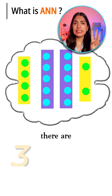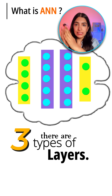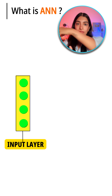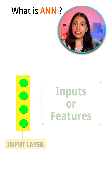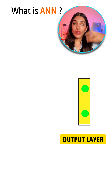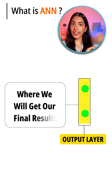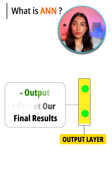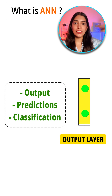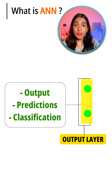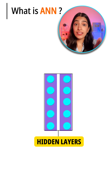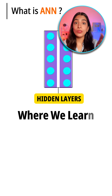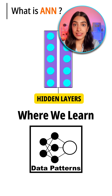There are majorly three types of layers. The input layer is where we get our input — our features. The output layer is where we will get our final result, the output predictions and classification. Then in between are the hidden layers — that is where we are going to learn the patterns in the data.